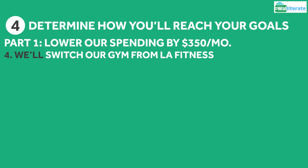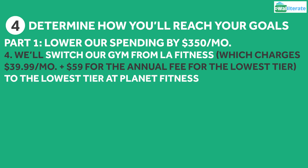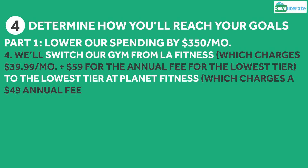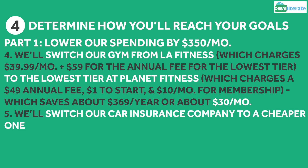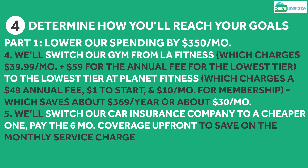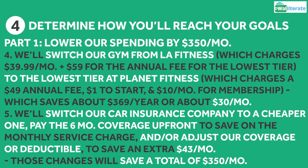We'll also plan to switch our gym membership from LA Fitness — which charges $39.99 a month and $59 for the annual fee for their cheapest tier — to the lowest tier at Planet Fitness, which currently charges a $49 annual fee, $1 to start, and $10 a month for membership, saving us about $369 a year or around $30 a month. We'll also switch our car insurance to a cheaper company, pay the 6-month coverage up front, and adjust our coverage or deductible a bit, to save an extra $43 a month. Those changes will save us about $350 a month.